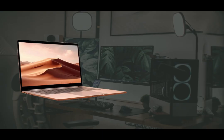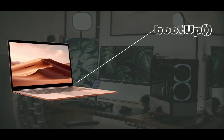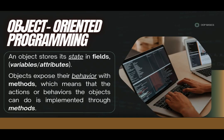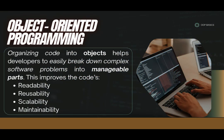For example, the laptop's state may include its RAM, its size, or its color. Its behaviors may include booting up or shutting down. In OOP, software objects store state in fields — also called variables and attributes — and expose behavior through methods, or the actions that an object can perform or receive. Organizing code into objects helps developers break down complex software into manageable, reusable, and maintainable parts, making development easier and scalable.